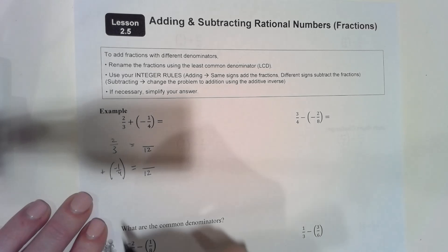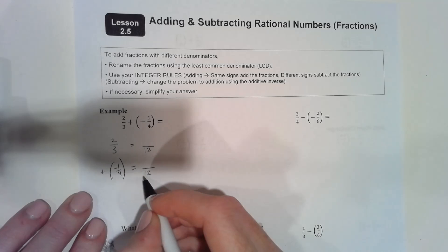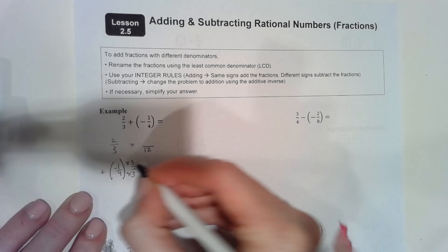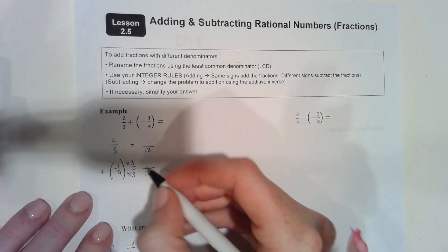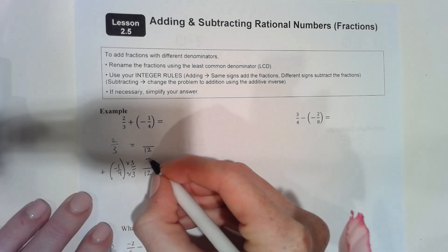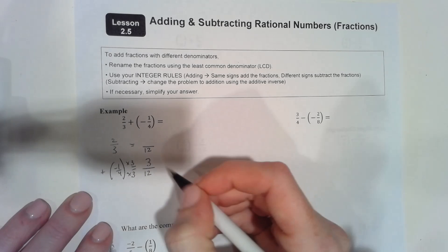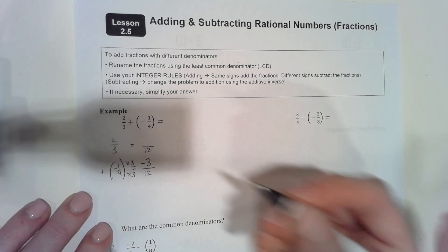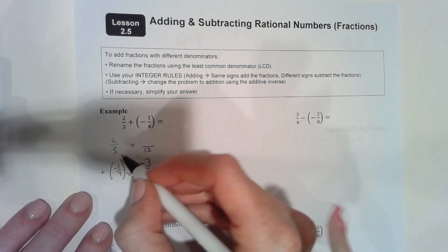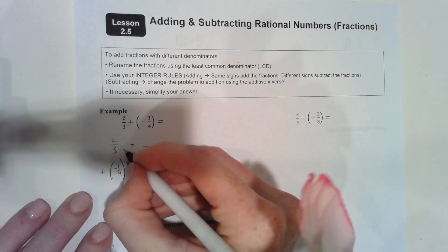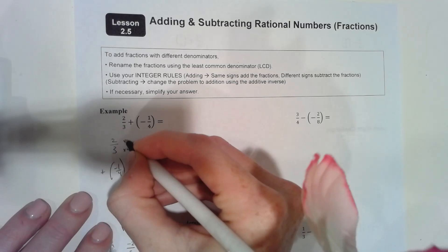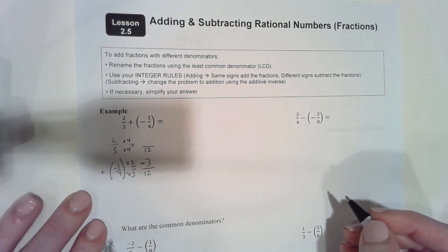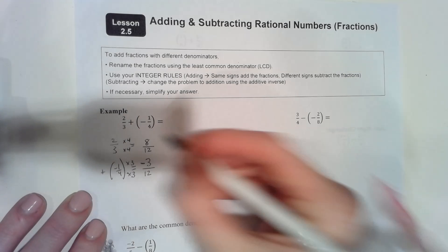What did I multiply four by to get twelve? I multiplied by three. Whatever I do to the denominator I do to the numerator, so one times three is three. Since this fraction was negative, it stays negative. Up here, three times four gave me twelve, so I also multiply the numerator by four: two times four makes eight.